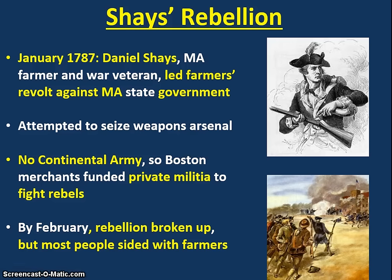In January 1787, Daniel Shays, a Massachusetts farmer and veteran of the Revolutionary War, led a farmers' revolt against the Massachusetts state government. Just like in the Revolutionary War, this farmers' militia attempted to seize weapons and establish an arsenal. There was no Continental Army — it had been disbanded at the end of the war. So Boston merchants used their own funds to hire a private militia to put down the rebellion. By February, most of the rebellion had been broken up, but the people were actually more sympathetic with the farmers than with the government.